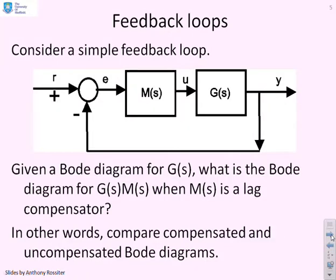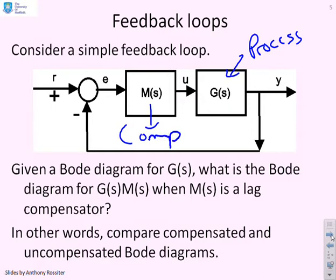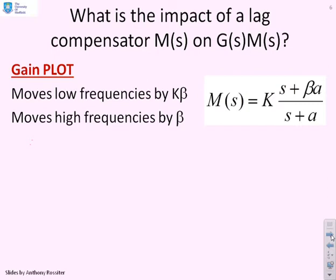As a reminder about feedback loops: if we have a feedback loop where G is the process and M is the compensator, what we're interested in is how the Bode diagram for GM relates to the Bode diagram for G — in other words, when we add the lag compensator, what does it do to the Bode diagram? In terms of the gain plot, the lag compensator moves low frequencies up by K·beta and high frequencies up by K.